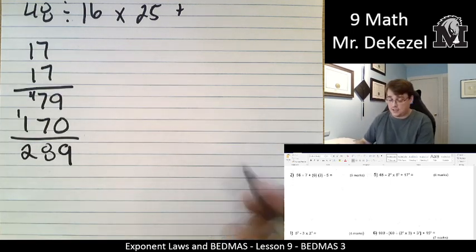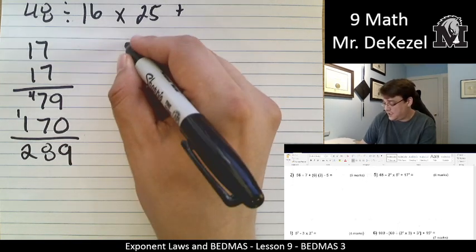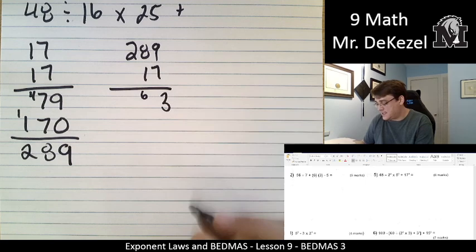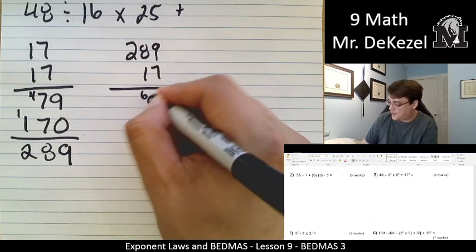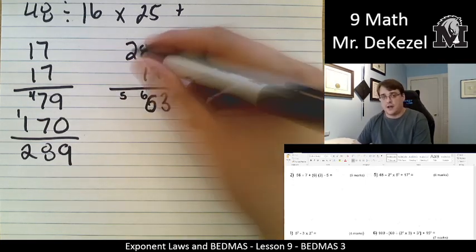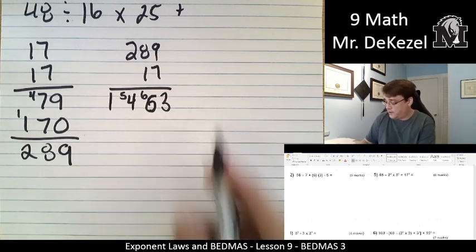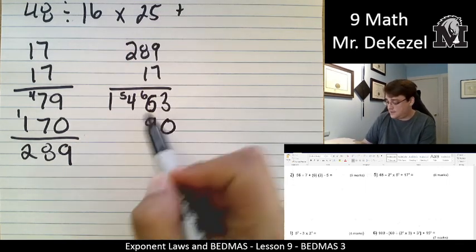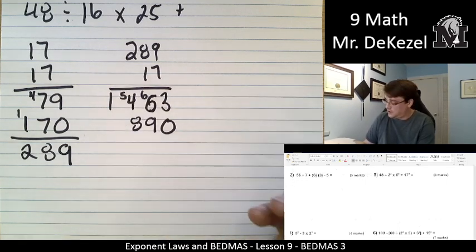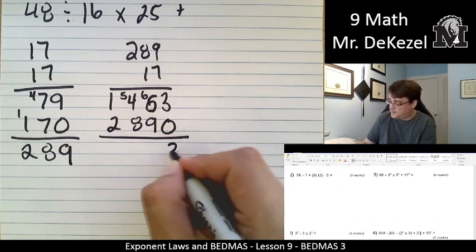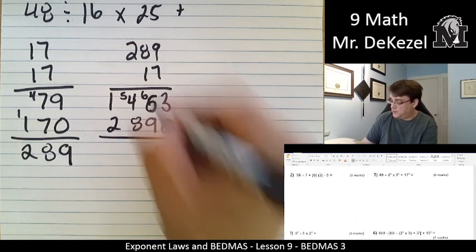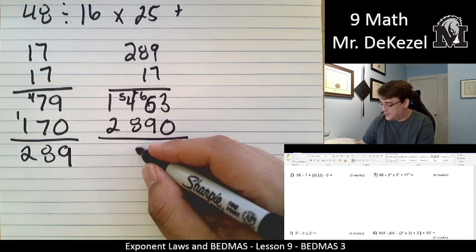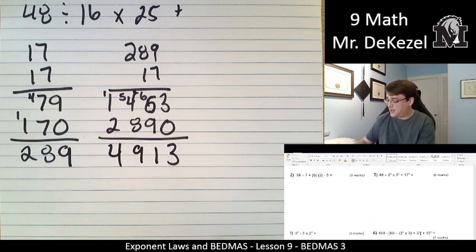So 289 is 17 squared, but we want 17 cubed, so 289 times 17 again. 7 times 9 is 63, so we have a little 6 to add. 7 times 8 is 56, so we have a 6 here and a little 5 to add. 7 times 2 is 14, we have nowhere to add that so we just lay it out. We move over, we have a placeholder 0. 1 times 9 is 9, 1 times 8 is 8, and 1 times 2 is 2. So then we're going to go ahead and add these all together. This comes to 3. 9 plus 6 is 15, plus 6 is 21, so we're going to carry that over. 5 plus 4 is 9, plus 2 is 11, plus 8 is 19, so we're going to carry another 1 over. And I get 4,913.